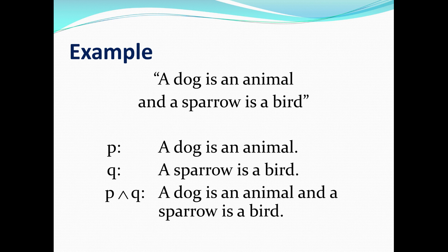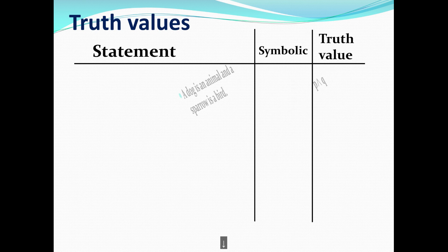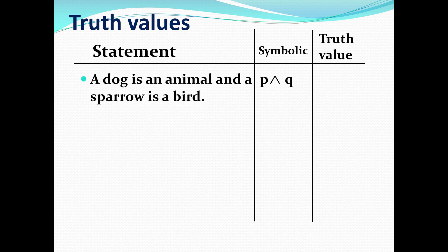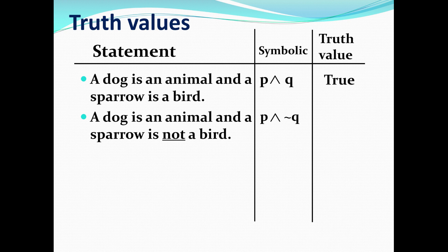Let's take the first statement: a dog is an animal and a sparrow is a bird, symbolically P and Q. Do you agree? The answer is yes, so the truth value is true. In the second statement, we negate just Q: a dog is an animal and a sparrow is not a bird. Even though it's true that a dog is an animal, it is not true that a sparrow is not a bird. So as a conjunction, together that statement is false.